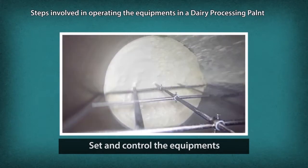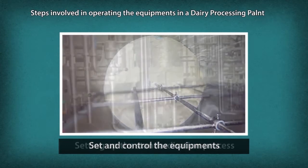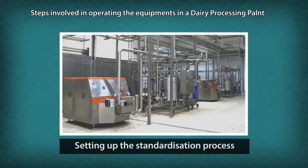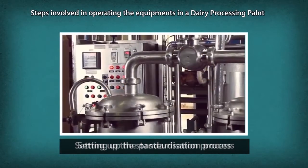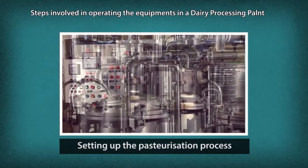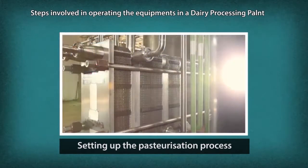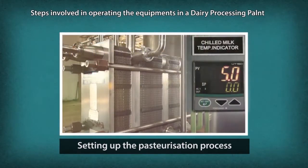Open valves to allow milk through filter. Adjust controls of the separator and set process parameters. Open valves to allow milk into the homogenizer to produce standardized milk. Set process parameters to pasteurize milk and cream. Turn valves to admit steam into the pasteurizer. Open valves to allow milk and cream into the pasteurizer. Observe temperature and pressure gauge of the pasteurizer.